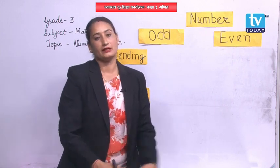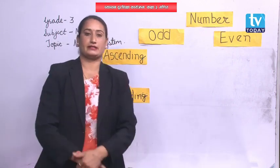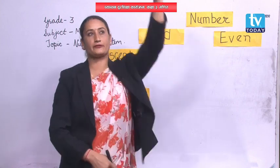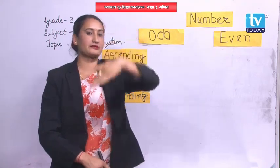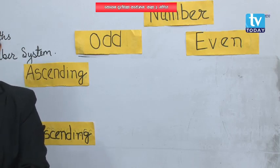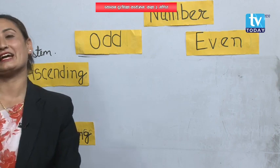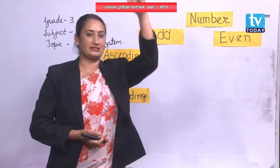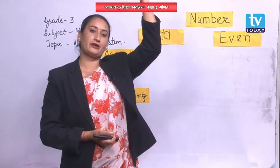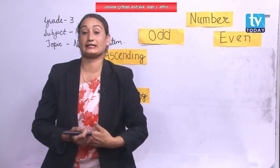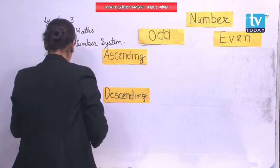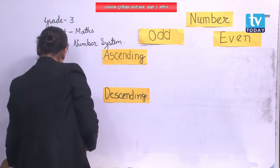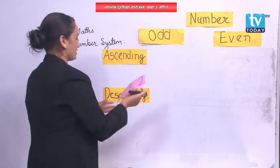Descending means decreasing by itself — coming from up to down. If you go up, you have to come down to have your feet on the ground floor. Going up is ascending order; coming from up to down is descending order. I'm going to separate the numbers according to ascending and descending order.